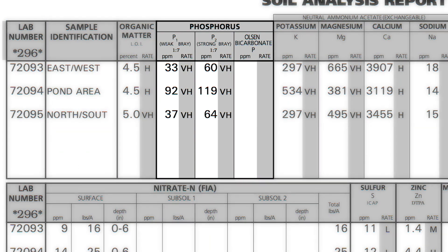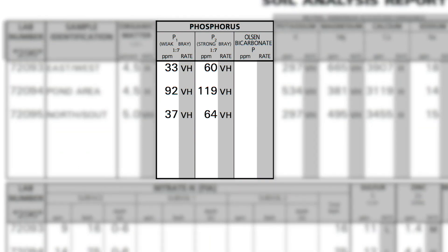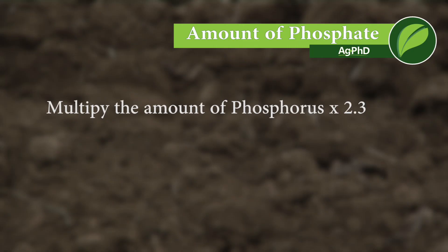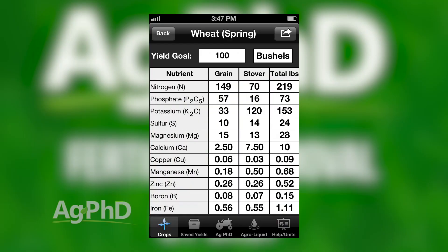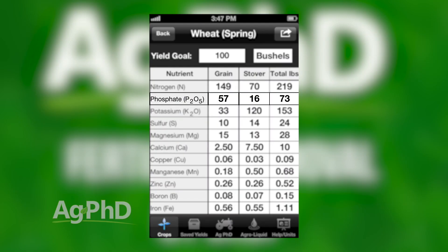On most soil tests you will see a phosphorus number. You need to multiply that number times 2.3. So for example, if your phosphorus level shows 10, you multiply that times 2.3 and you actually have 23 parts per million of phosphate — there's a big difference there. Most people talk about how much phosphorus your crop needs, but what they mean is phosphate. When you look at the Ag PhD Fertilizer Removal App, it'll tell you specifically phosphate — this is how much phosphate you need, not how much phosphorus.